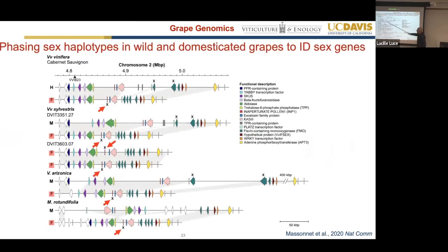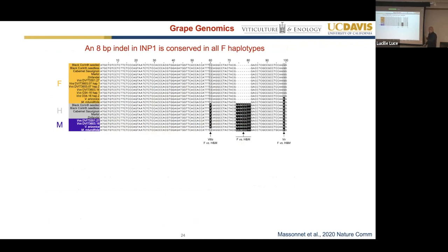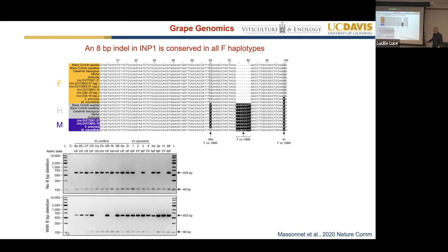For gene content: when we compare the H haplotypes across all vinifera, male and female, the gene content is 100% conserved. Interestingly, we observed individual pseudogenes present only in the female haplotypes — but in 100% of them. Every single female haplotype had a pseudogene that was actually functional in the male and hermaphrodite haplotypes. The mutation forming the pseudogene is the same: eight base pairs missing in all female haplotypes, present in all male and hermaphrodite haplotypes. This was shared even in Muscadinia and Arizona, which are 20 million years separated — making it an interesting candidate.